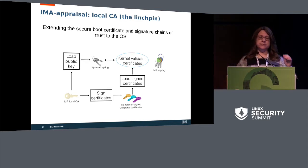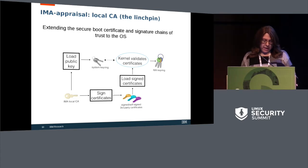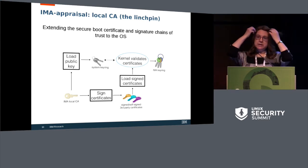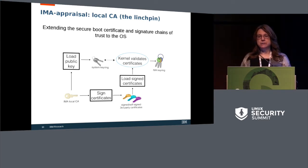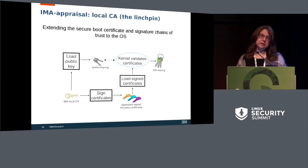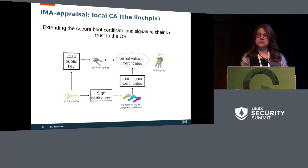This diagram basically shows that you have the local CA key, and it's used to sign other keys and can be used to sign third-party keys. The question is how we can get this local CA key onto the built-in keyring in order to verify keys as they're being added to the IMA keyring. The same goes for EVM.